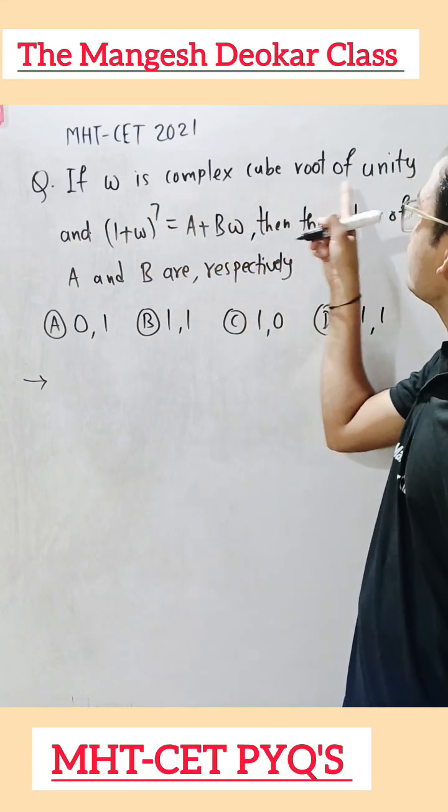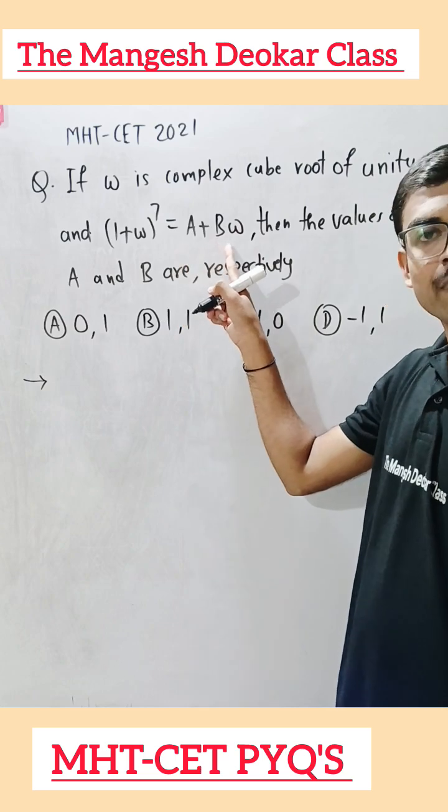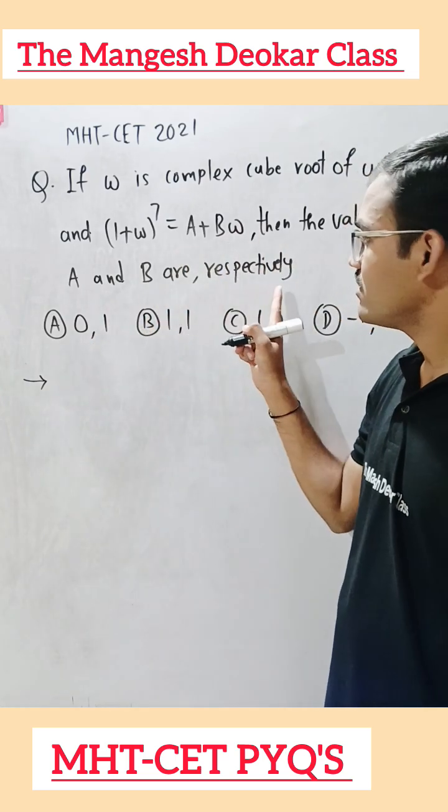The question is: If ω is a complex cube root of unity and (1 + ω)^7 = a + bω, then the values of a and b are respectively.